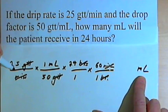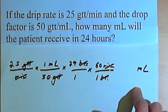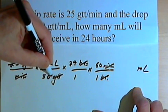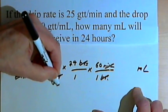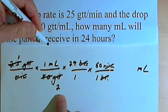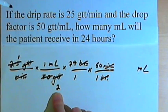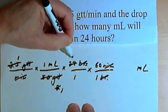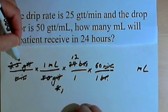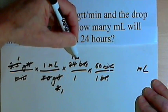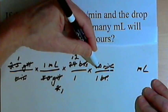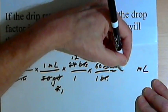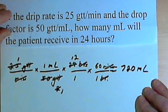Now I can simplify the numbers. I've got a 25 and a 50 — dividing both by 25 gives 1 and 2. Then I've got a 2 and 24 — dividing both by 2 gives 1 and 12. Now I've got 1 times milliliters times 12 times 60. Twelve times 60 is 720, so the answer is 720 milliliters.